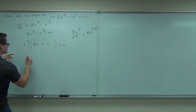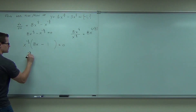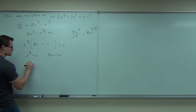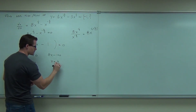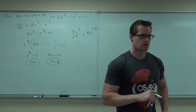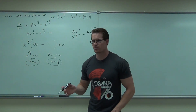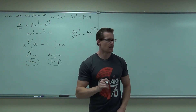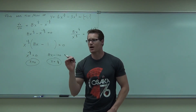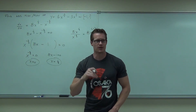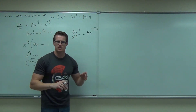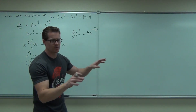The zero product property says that either x to the negative two-thirds equals zero, or 8x minus 1 equals zero. Don't forget about that first factor. That means x equals zero, or x equals one-eighth. Those numbers are called critical points or critical numbers — your book might say critical numbers. Those are where you have the potential of having a relative max or relative min. Come see me if you need help factoring out negative exponents — that comes from intermediate algebra.